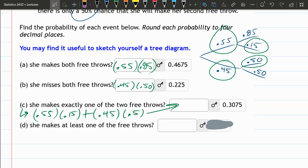Now, she makes at least one of the free throws. I could take part C and add in make-make. The make-make would be those two multiplied together. That's one way to do it.